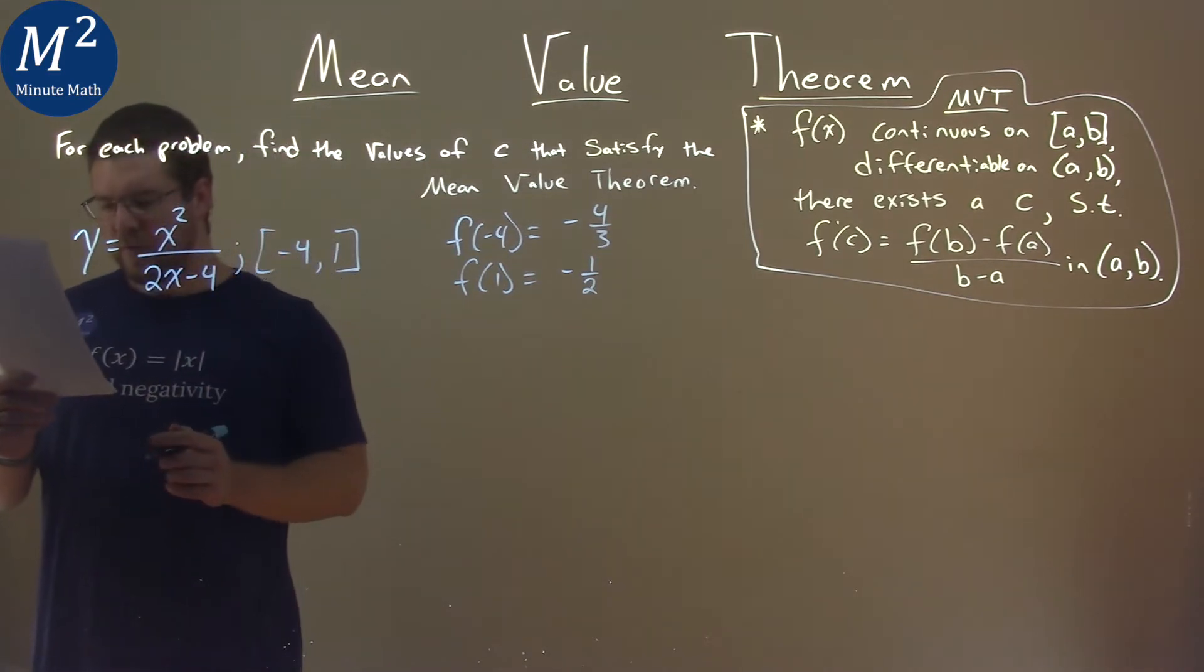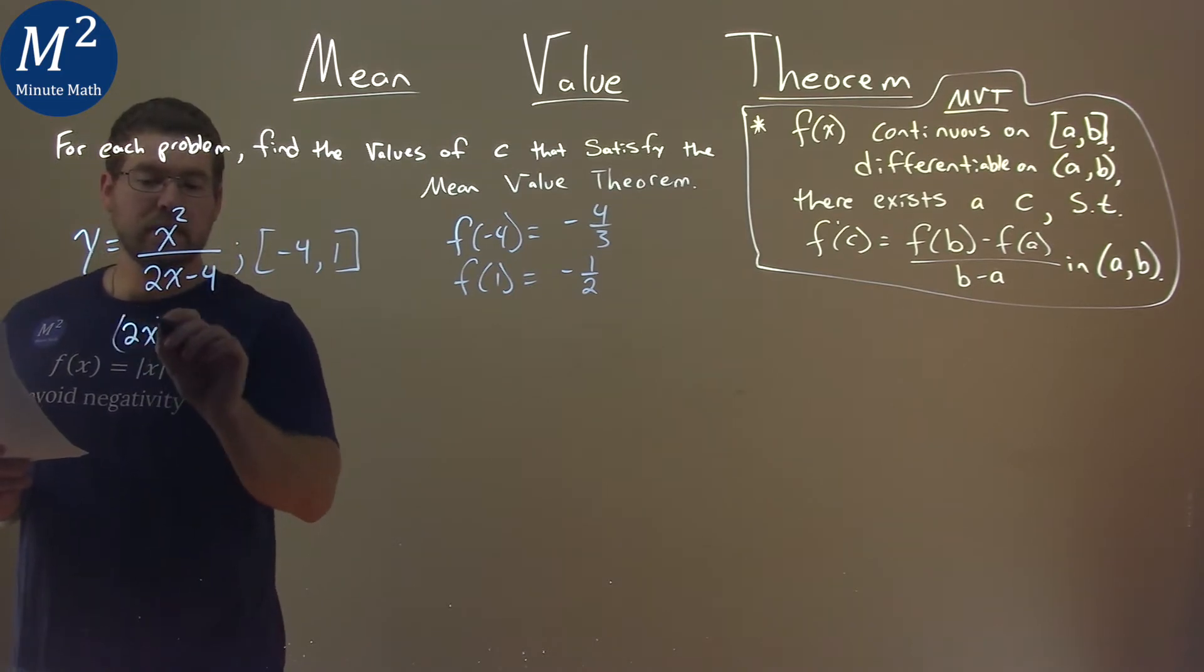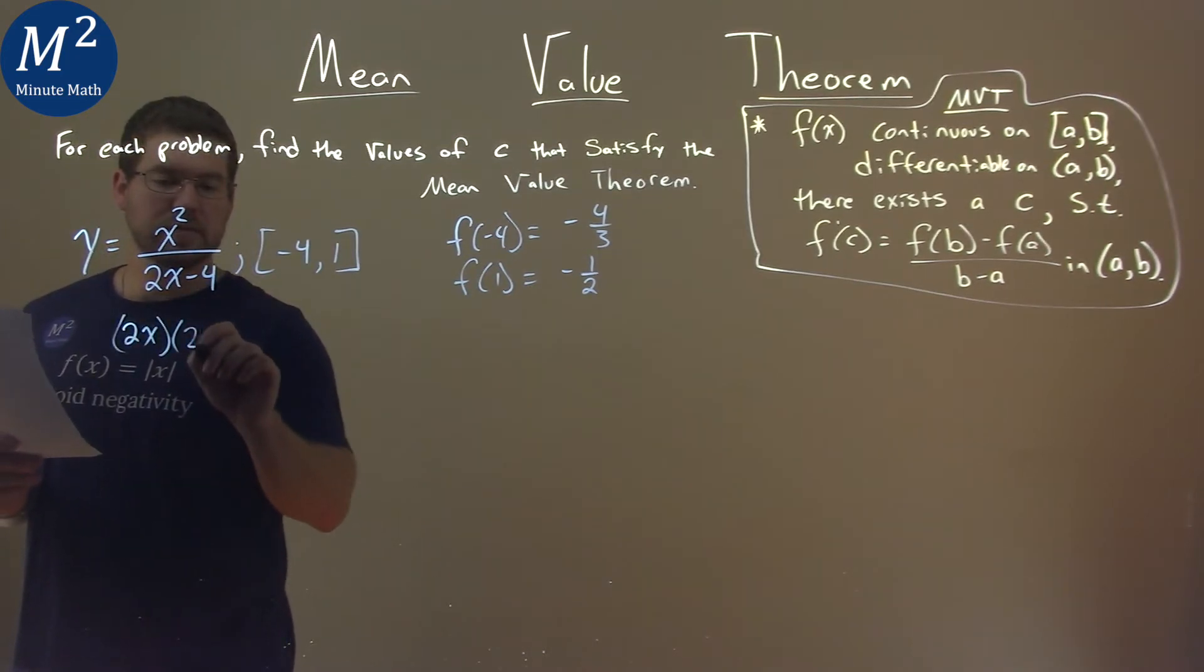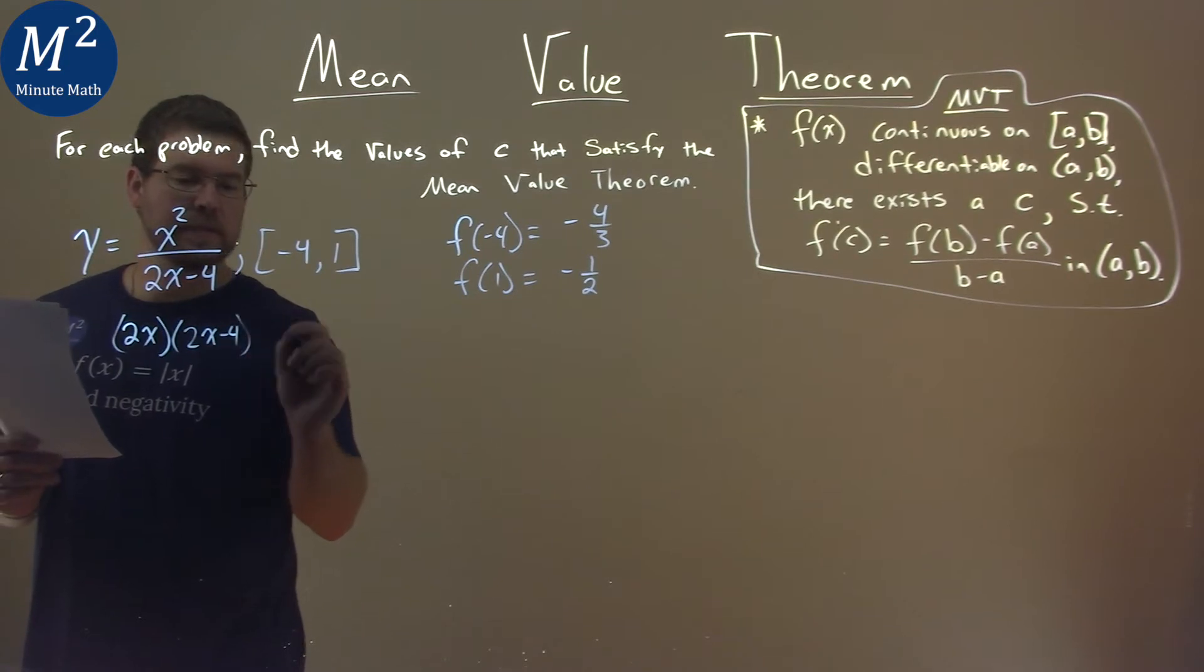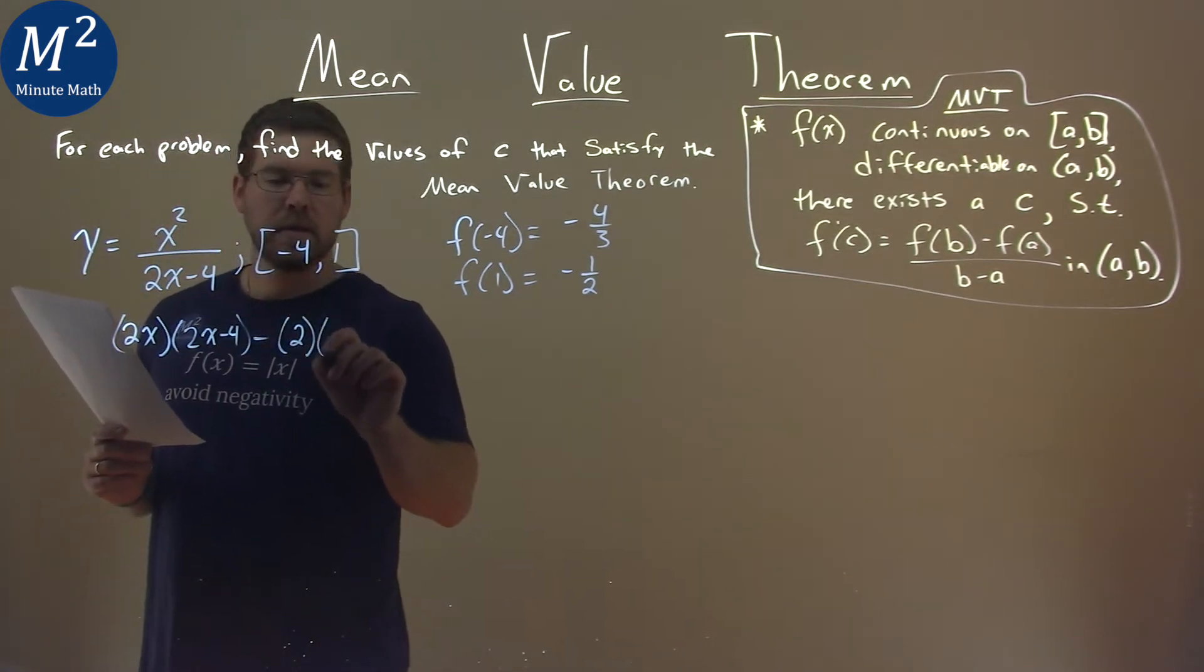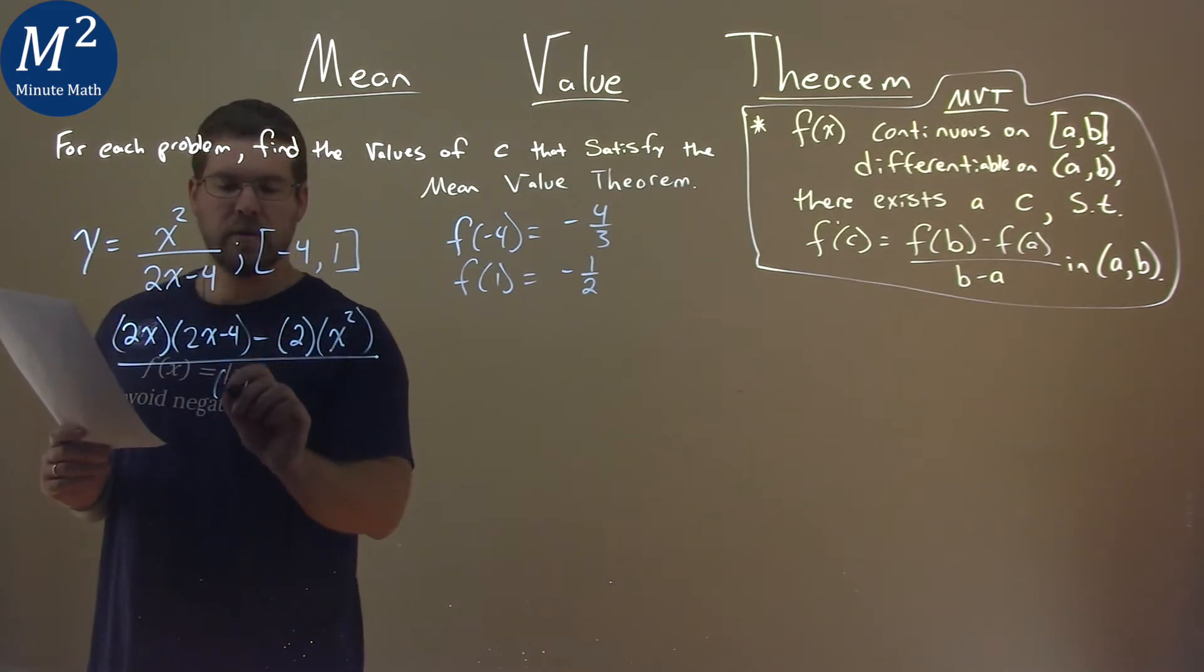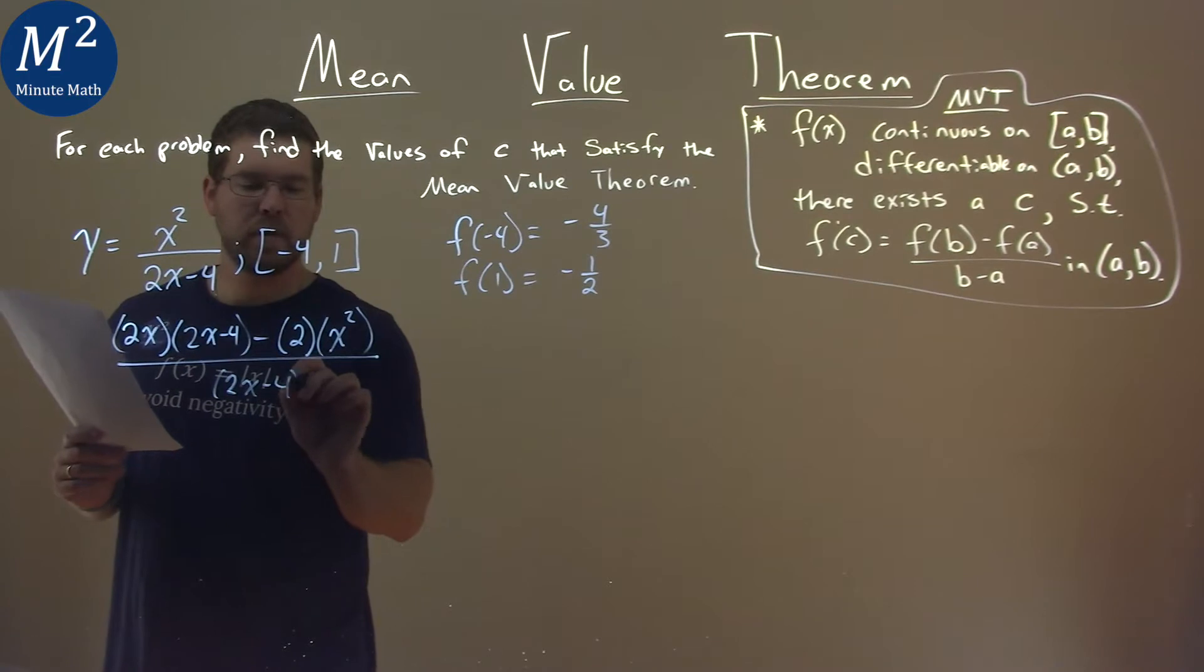So, derivative of our function. Derivative of x squared is 2x times the denominator, 2x minus 4. We're using the quotient rule here. Minus derivative of the denominator, which is 2, times the numerator, which is x squared, all over denominator, 2x minus 4, all square.